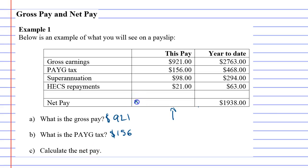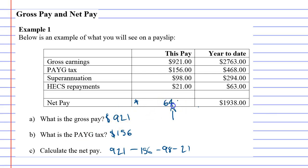Question C says to calculate the net pay — that just means fill in the blank. Net pay is calculated by taking the gross pay and subtracting all the deductions. So we go 921 minus 156 (tax), minus 98 (superannuation), and minus 21 (HECS debt). Working that out: 921 minus 156 minus 98 minus 21 equals $646.